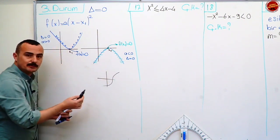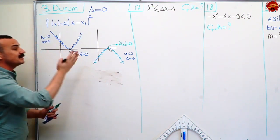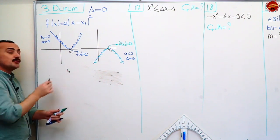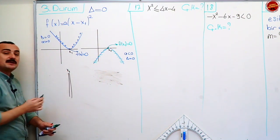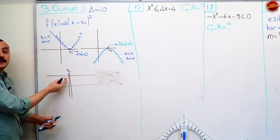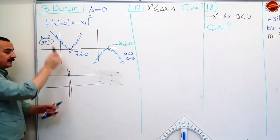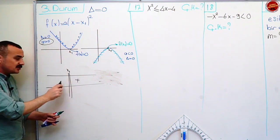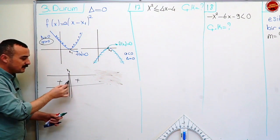Eğer eşitlik varsa içini dolu yapacaksın, çözüm kümesi tüm reel sayılar gibi olacak. Eğer eşitlik yoksa x₁ kökünü çözüm kümesinden atacağız. Eksili olan da aynı şekilde: x₁ çift katlı kök, çift çizgi. A'nın işareti sıfırdan küçük olduğu için eksi, o zaman burada da eksi. Çift katlı köklerde notunu yaz: çift katlı köklerde işaret değişmez.